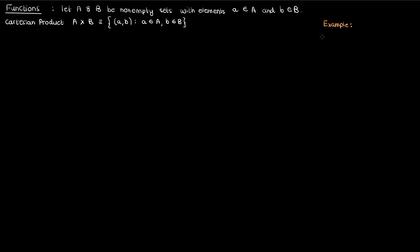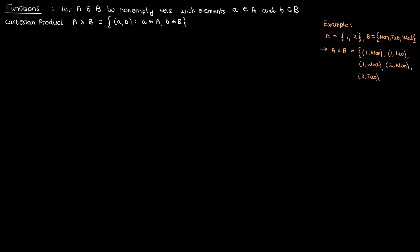For example, if I had the set a comprised of the elements 1 and 2, and I had a set b comprised of the elements Monday, Tuesday, and Wednesday, then the Cartesian product of a and b consists of all ordered pair combinations between the elements of set a and those of set b.